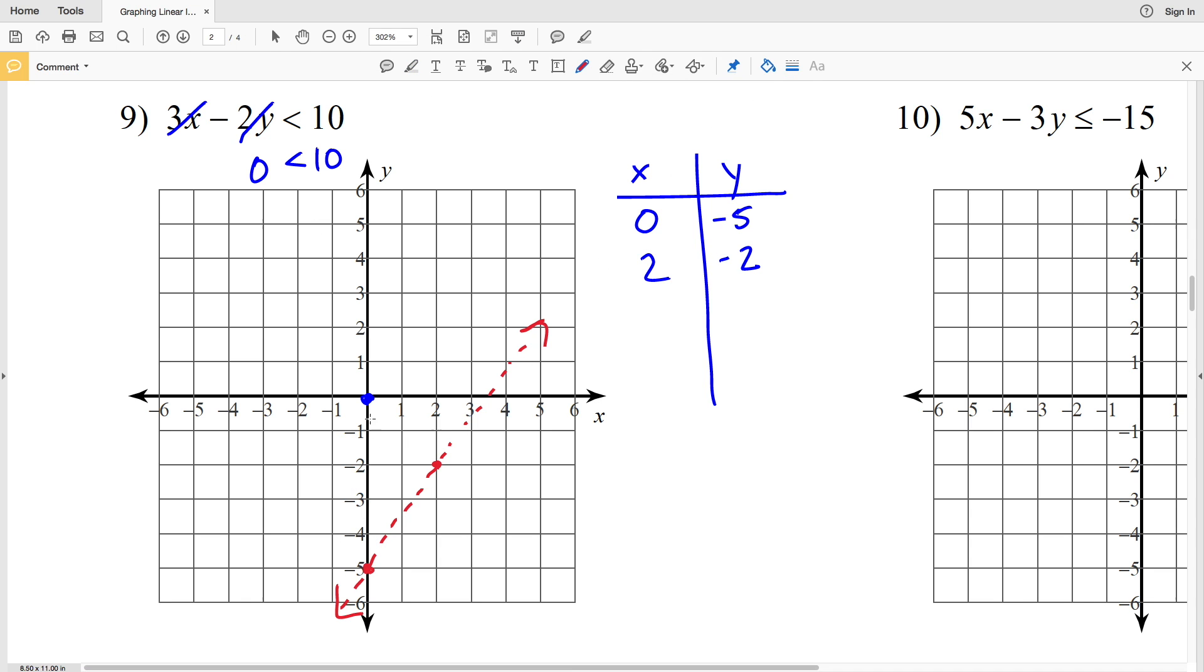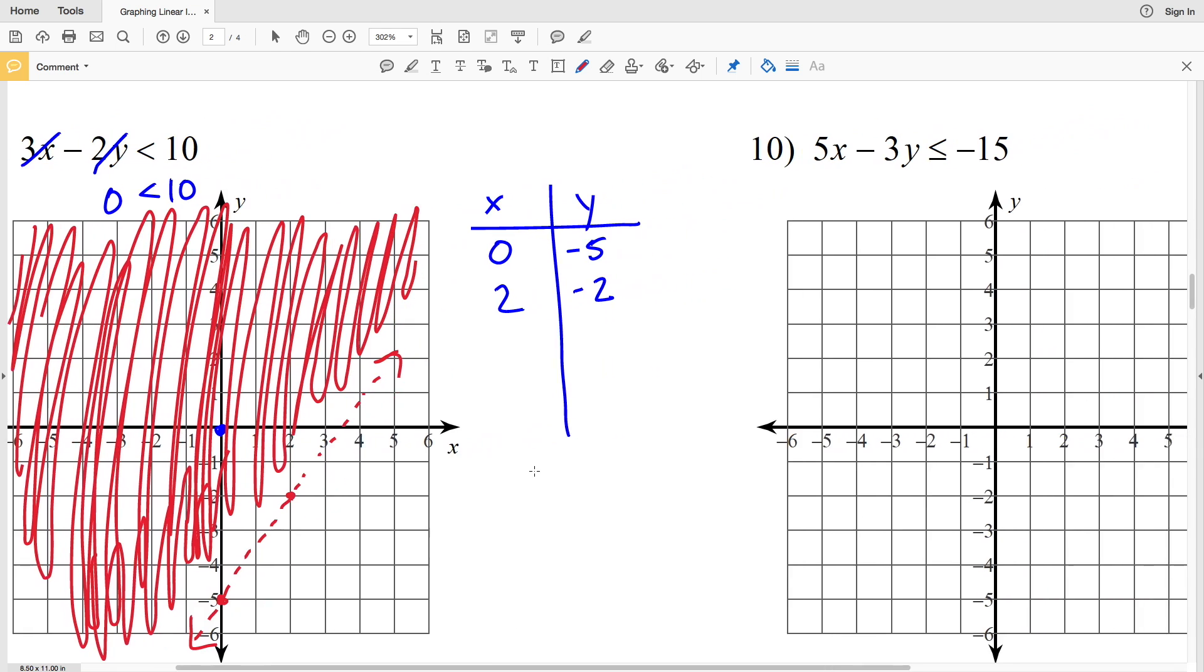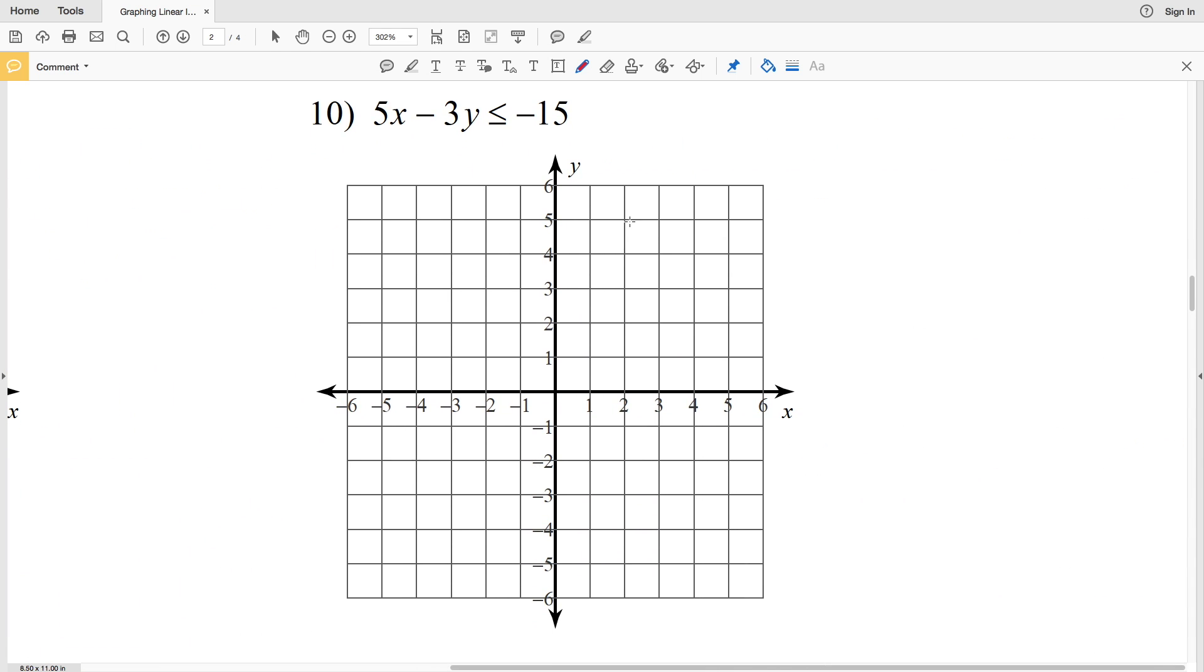So I'm going to shade in including that 0. Let's move on to number 10. In number 10 I'm going to start by rewriting this in slope-intercept form. I'm going to subtract 5x from both sides. I'll get that negative 3y is less than or equal to negative 5x minus 15. Then I'm going to divide both sides by negative 3. I'll be left with y on the left hand side, and since I divided by a negative, I have to flip this inequality.